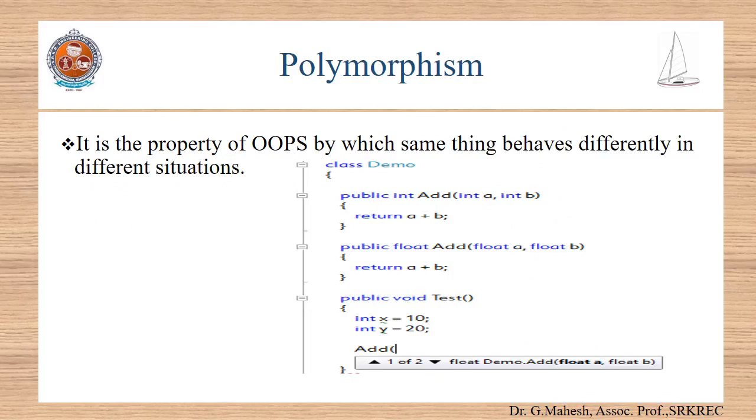Next comes polymorphism. It is the property of OOPs by which same thing behaves differently in different situations. For example, in C++ the same function could be used for different operations like it could be used both for adding integers and also for adding floats. The mechanism is called method overloading. By operator overloading, operators also could be used to operate on different kinds of operands. Both method overloading and operator overloading provides polymorphism that is illustrated in the figure.